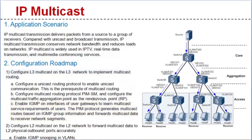After finishing the Layer 3 multicast configuration, configure a Layer 2 multicast on the Layer 2 network to forward multicast data through the Layer 2 outbound physical ports accurately. Accurate multicast forwarding can reduce bandwidth consumption on Layer 2 links. Source addresses for multicast packets are not multicast addresses. Thus, Layer 2 network devices cannot learn MAC address entries from received multicast packets. If a Layer 2 multicast is not configured, multicast packets will be broadcast on Layer 2 networks, resulting in a waste of link bandwidth.